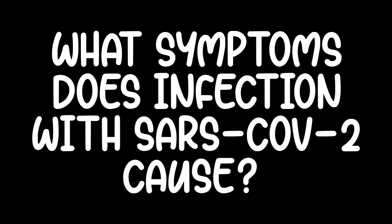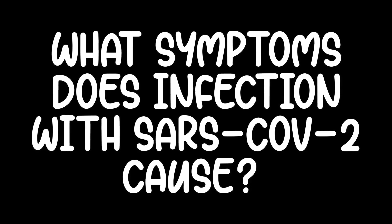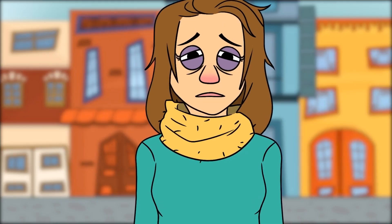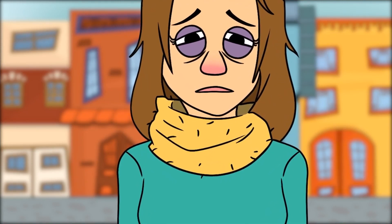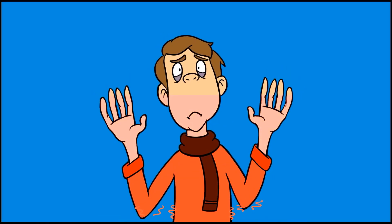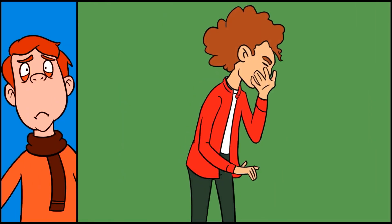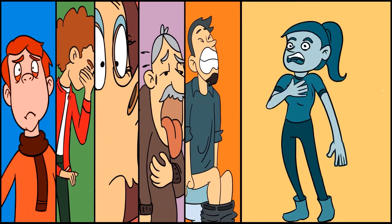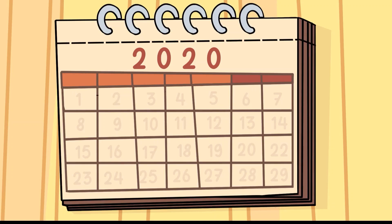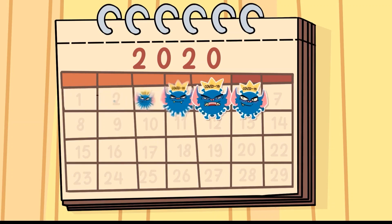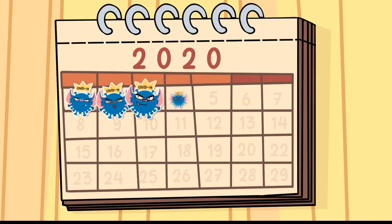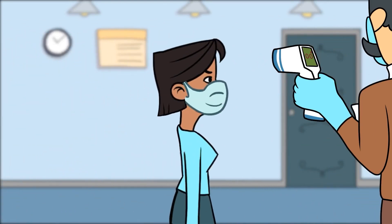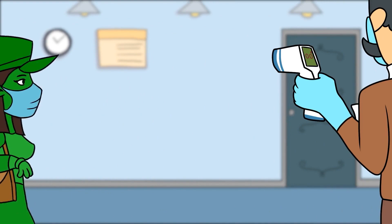Symptoms can range from no symptoms at all to severe lung infections. For those who do experience symptoms, the most common ones to watch for are a fever of at least 100.4°F or 38°C, dry cough, loss of taste or smell, fatigue, diarrhea, and shortness of breath. Symptoms appear on average five to six days after exposure, but can occur from as early as two days to as late as 14. Even people carrying the virus with no obvious symptoms might still have a measurable low-grade fever, and this is an important screening tool used by health professionals.